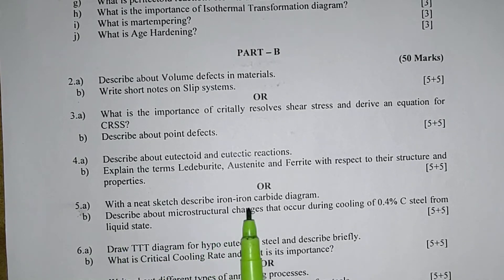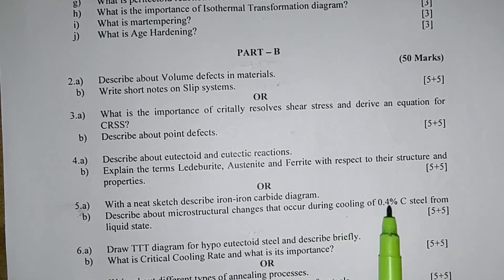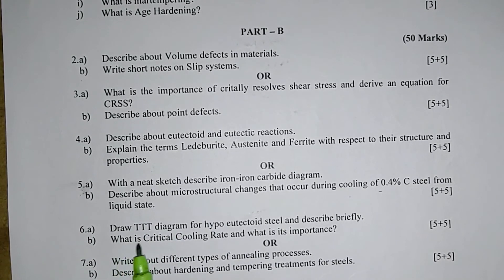With a neat sketch describe iron-iron carbide diagram. Describe about microstructural changes that occur during cooling of 0.4% carbon steel from liquid state.